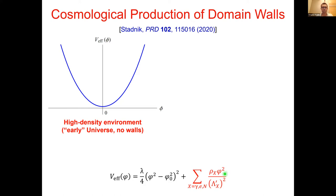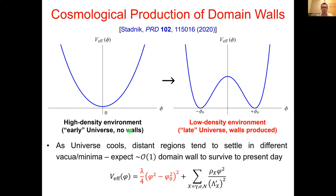In the model of scalar field domain walls with the quartic potential and phi-squared interaction, there is a natural mechanism for cosmologically producing domain walls. Starting in the early universe with high ambient matter energy density, the effective potential is dominated by the matter-induced term with only a single minimum — trivial topology preventing domain wall formation. But as the universe expands, the matter density dilutes, and at a critical phase transition the effective potential changes to more closely resemble the bare quartic potential, allowing production of cosmological domain walls.